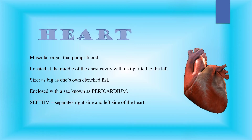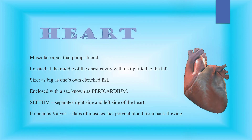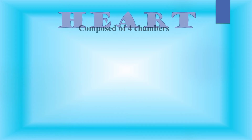The muscle called the septum divides the heart into the right side and left side. Our heart also contains valves, which are flaps of muscle that prevent blood from back-flowing.